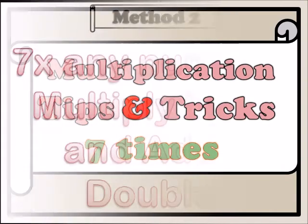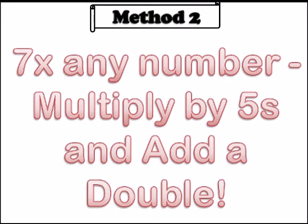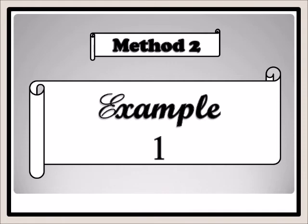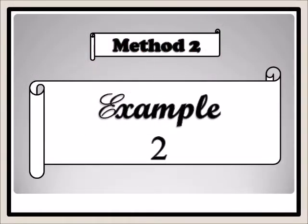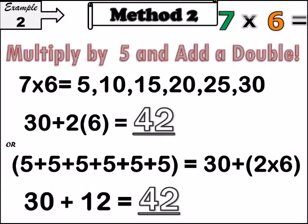Multiplication tips and tricks: when multiplying seven times any number, multiply by fives and then add a double. For example, seven times four — you count in fives: five, ten, fifteen, twenty — that is four fives. Then you add the double: four plus four is eight. So twenty plus eight equals twenty-eight. Seven times four equals twenty-eight.